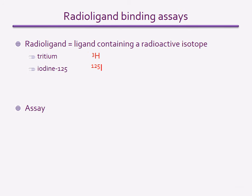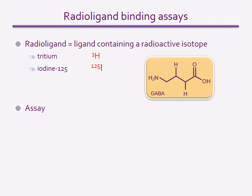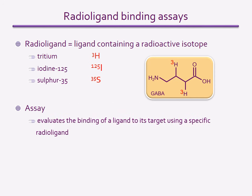In order to measure the binding of a ligand to a target, you need to have a parameter you can easily detect. For this we use radio ligands, which are ligands that have a radioactive isotope incorporated into them. The most commonly used radio isotopes are tritium and iodine-125. The structure on the right shows the neurotransmitter GABA; two of its hydrogen groups have been replaced with tritium to make it radioactive. Sulfur-35 is used to study ligand receptor binding as well, but it has a very specific use which will be explained later.